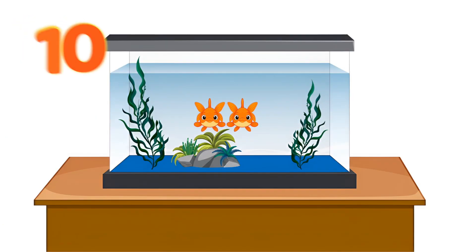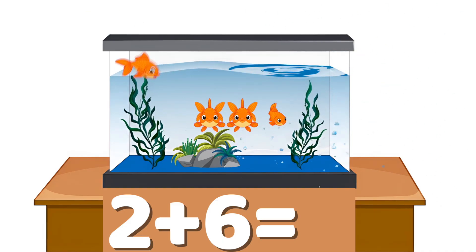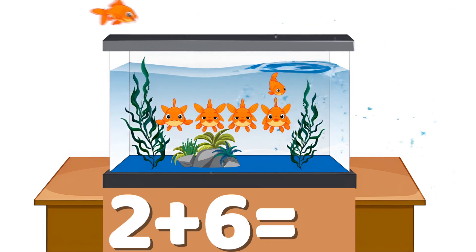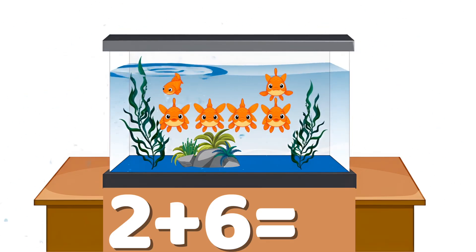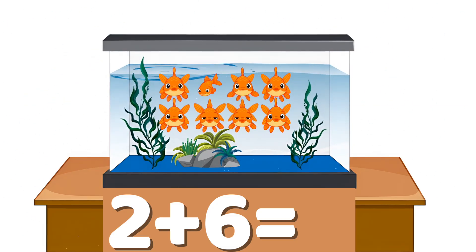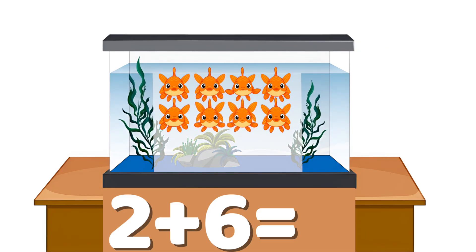Example number ten: two plus six. Two fish are in the tank. Six more fish swim into the tank. Count with me: one, two, three, four, five, six, seven, eight. Two plus six equals eight.